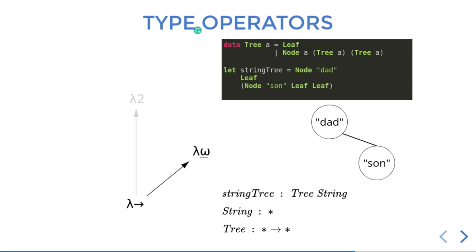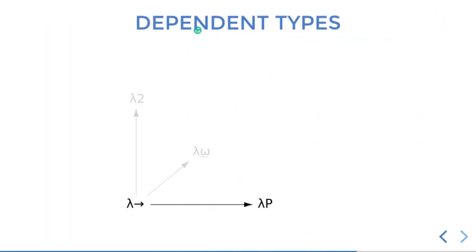These are two possible directions in which you can extend your type system. In one direction, you made functions depending on some type — parametric polymorphism. In the other, you made types depending on other types — type operators. The other natural direction is dependent types: you want to make your types depend on some value. This means you don't just have a list of integers, but you can have a type for the list of two integers and a different type for the list of three integers. Types can depend on values.